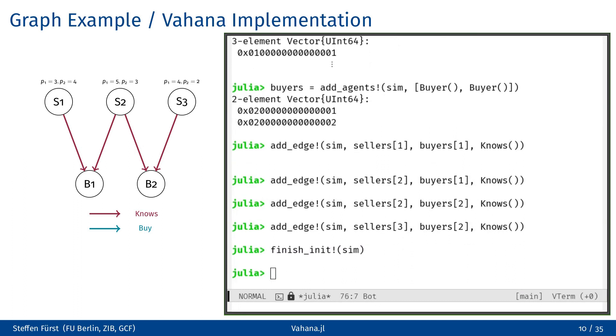As the final step, we must invoke the finish_init function. In the case that the simulation is run in parallel, this function partitions the graph and distributes it among the individual processes. Consequently, from this moment forward, each process only is aware of the subgraph of the original graph.